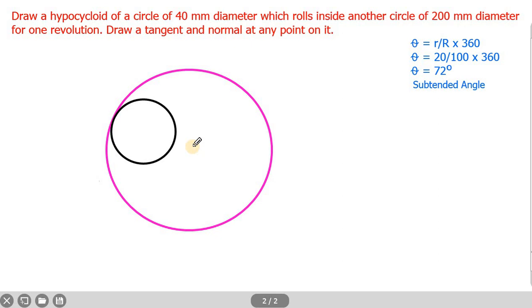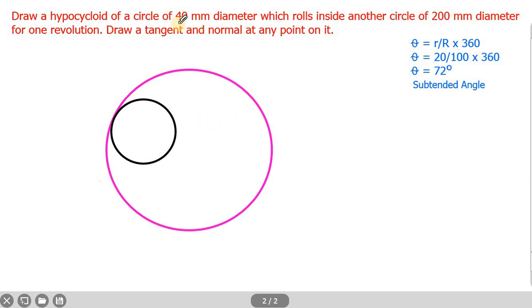Before starting the diagram, we need to know what a hypocycloid is. A hypocycloid is a curve that is generated by a point on the circumference of a circle which rolls inside another circle. The larger circle is called the directing circle and the smaller circle is the rolling circle. When the rolling circle rolls over the directing circle, a point on its circumference generates the hypocycloid. Here, the rolling circle diameter is 40 mm and the directing circle diameter is 200 mm.